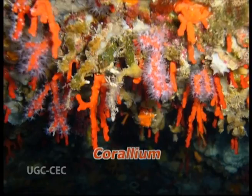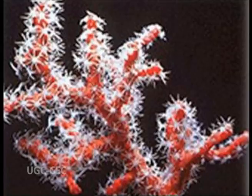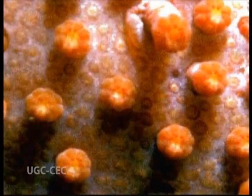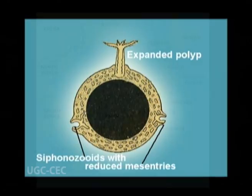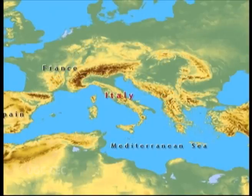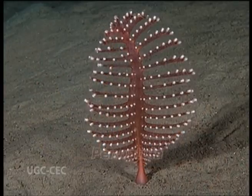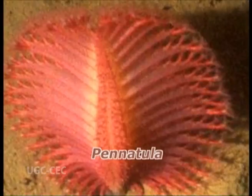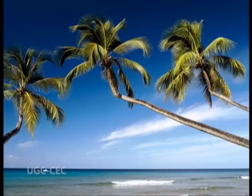Another example is Corallium. The skeleton is covered by a delicate coenosarc containing two types of polyps: autozoids that are nutritive polyps having eight pinnate tentacles bearing gonads, and siphonozooids that are small with reduced mesenteries and function for pumping water into the canals of the colony. Corallium is found near Japan and in deep Mediterranean seas. They are economically important as they are used in jewelry making. Pennatula and Renilla also show such type of dimorphism. Pennatula is found on the warm coast of Atlantic and Pacific Oceans. Renilla is found in the shallow waters of the coast of North and South Carolina and West Indies in colonial forms.